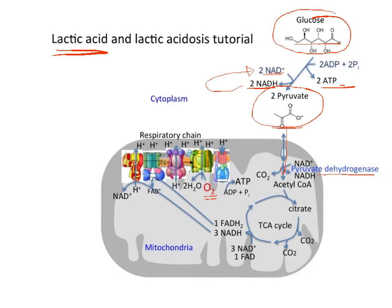One carbon dioxide comes off of each pyruvate, and an acetyl-CoA is the result from each pyruvate. The two carbons in the acetyl-CoA combine with a four-carbon molecule in the TCA cycle to make six-carbon citrate. Two CO2 are produced in the pathway and released, and there are four steps of carbon oxidation. In those carbon oxidation steps, electrons are transferred to three molecules of NAD and a molecule of FAD, resulting in three NADH and one FADH2 produced.